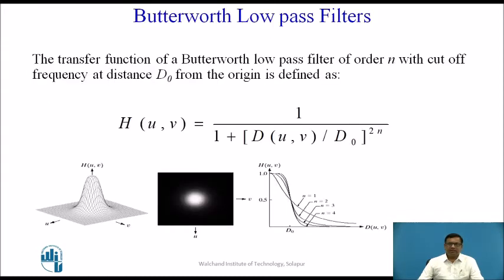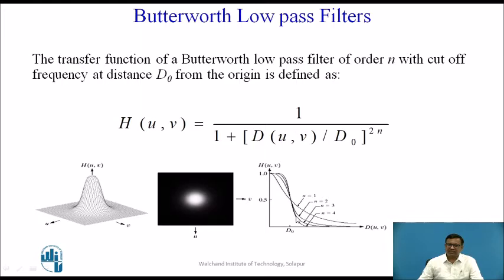Let us see the Butterworth Low Pass Filter. The transfer function of a Butterworth Low Pass Filter of order n with cutoff frequency at a distance D0 from the origin is defined here. This transfer function is represented using three different ways: an image representation, a 3D representation, and a coordinate representation of the same transfer function.